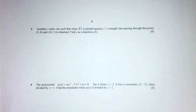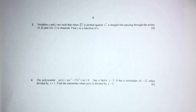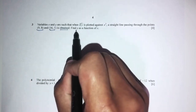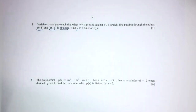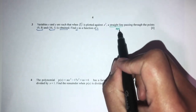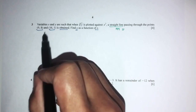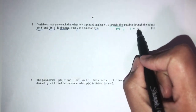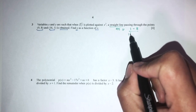Let's move on to question number 3. Variables x and y are such that when we plot the cube root of y against x squared, a straight line passing through given points is obtained. To find the equation of a straight line, we find its gradient using (y2 minus y1) over (x2 minus x1), which gives minus 7 over 7, so the gradient is minus 1.